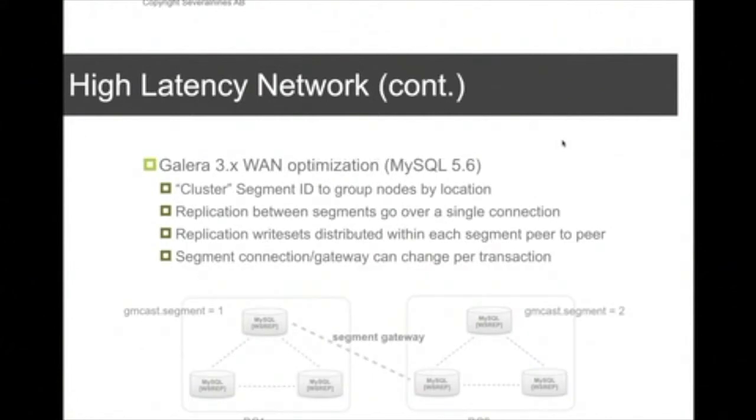With Galera 3 and using the MySQL 5.6 version, Codership introduced something called segment IDs. Segment IDs is a way to group nodes by location. So nodes that have the same segment ID belong to the same location or the same data center. And the replication happens through a segment connection. Galera chooses different segment connections depending on various internal implementation. A transaction can happen over different types of segment connections. One transaction can go over one set of nodes between data centers, and another transaction can go over another set of nodes. The benefit here is basically that you minimize the number and lower the bandwidth usage of Galera cluster.